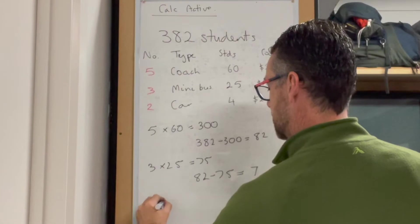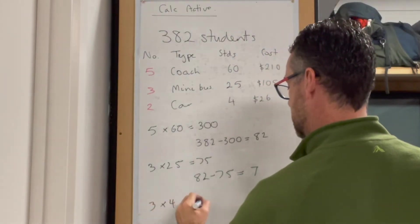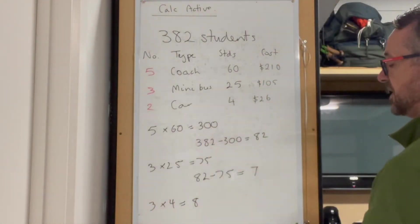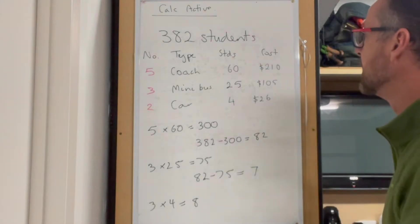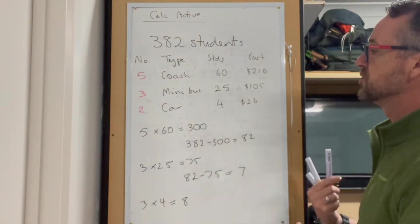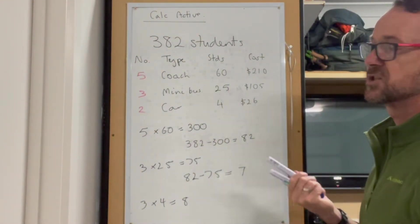3 times 4 equals 8, which is greater than the number of students. So the answer is 5 coaches, 3 minibuses, and 2 cars.